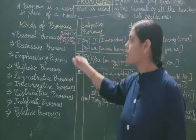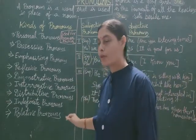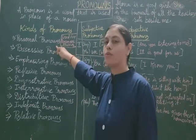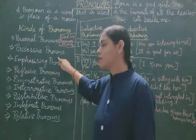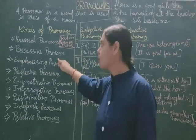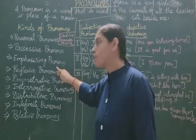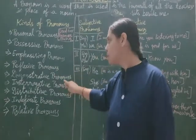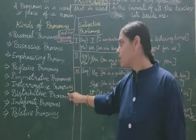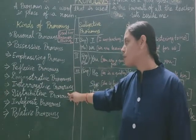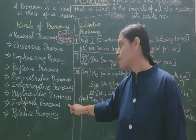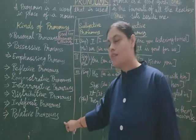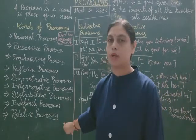There are different kinds of pronoun. First is personal pronoun. Second is possessive pronoun. Third is emphasizing pronoun. Fourth is reflexive pronoun. Fifth is demonstrative pronoun. Sixth is interrogative pronoun. Seventh is distributive pronoun. Eighth is indefinite pronoun. And ninth is relative pronoun.